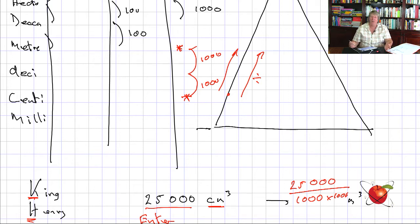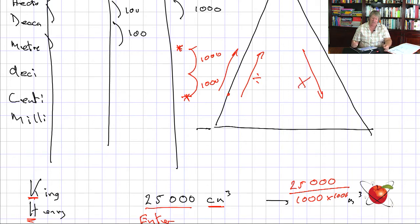Going the other way — downslope — we multiply, because we are getting bigger. The mountain is getting wider. From kilo at the top down to milli at the bottom, we're getting bigger, so we multiply. Going from milli to kilo, we're getting smaller, so we divide. It's as simple as that.